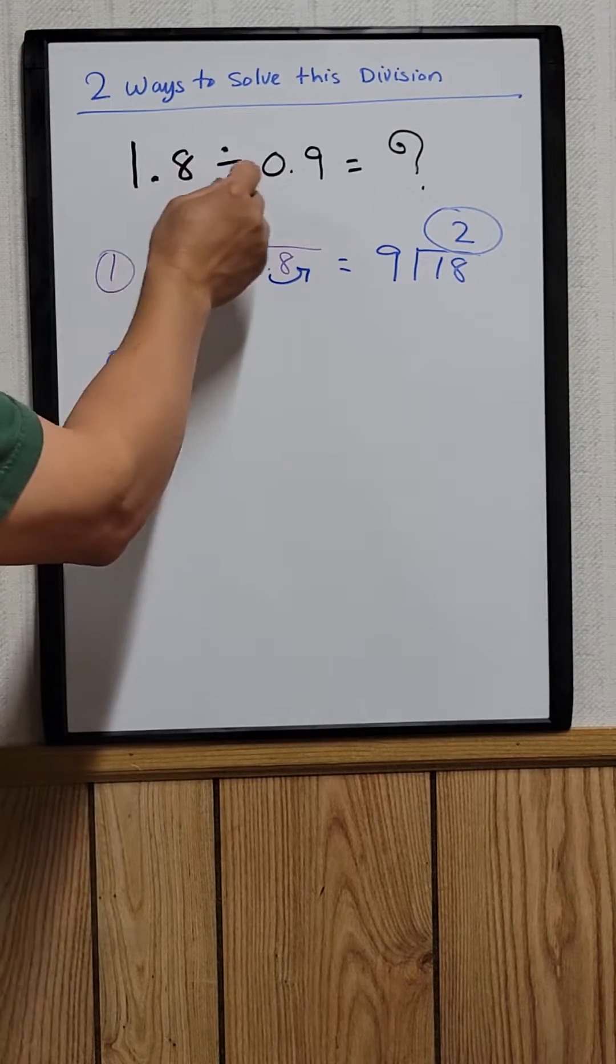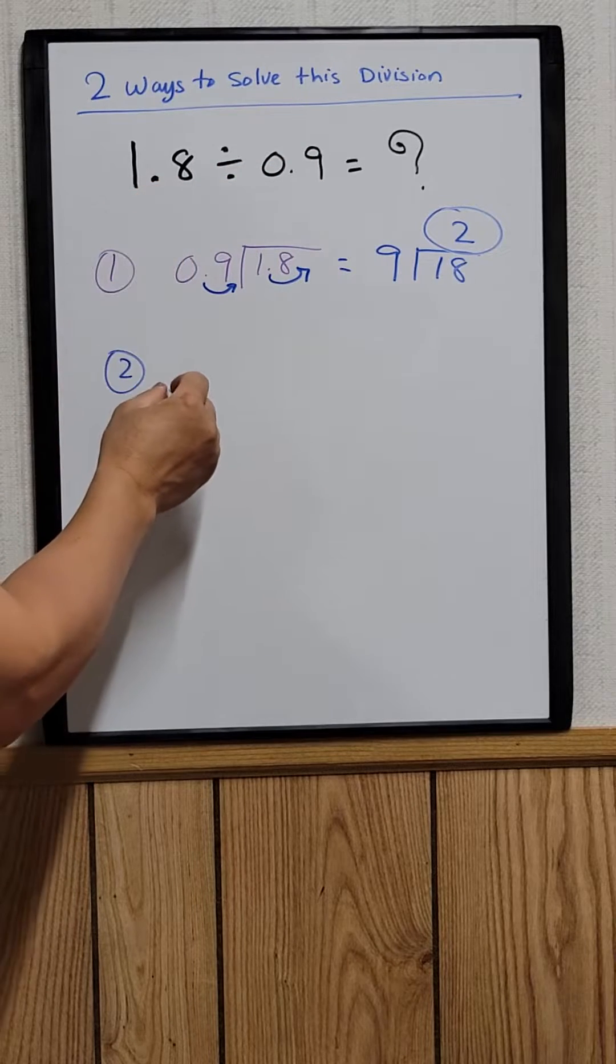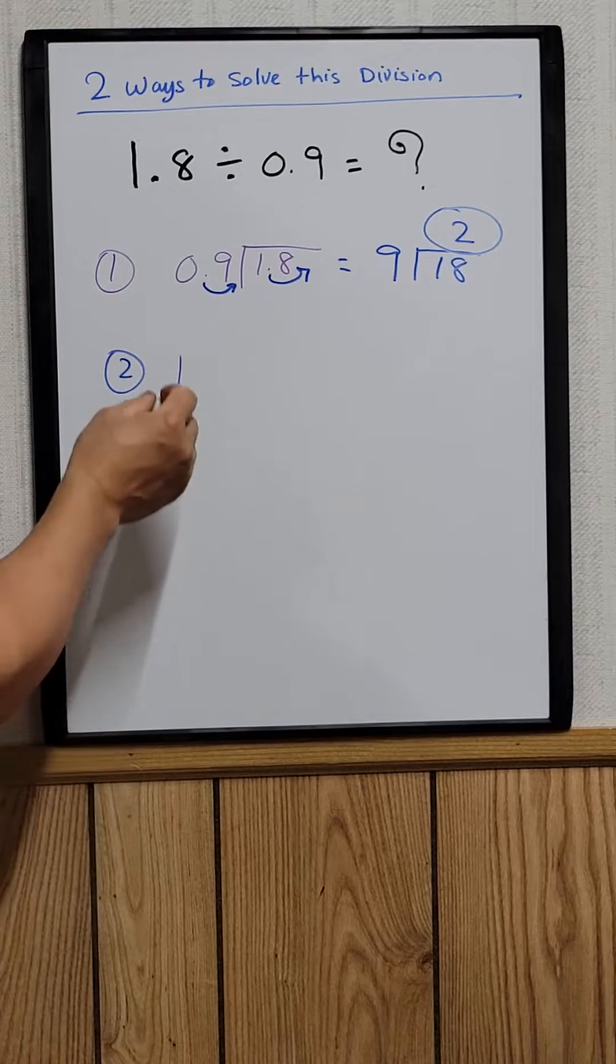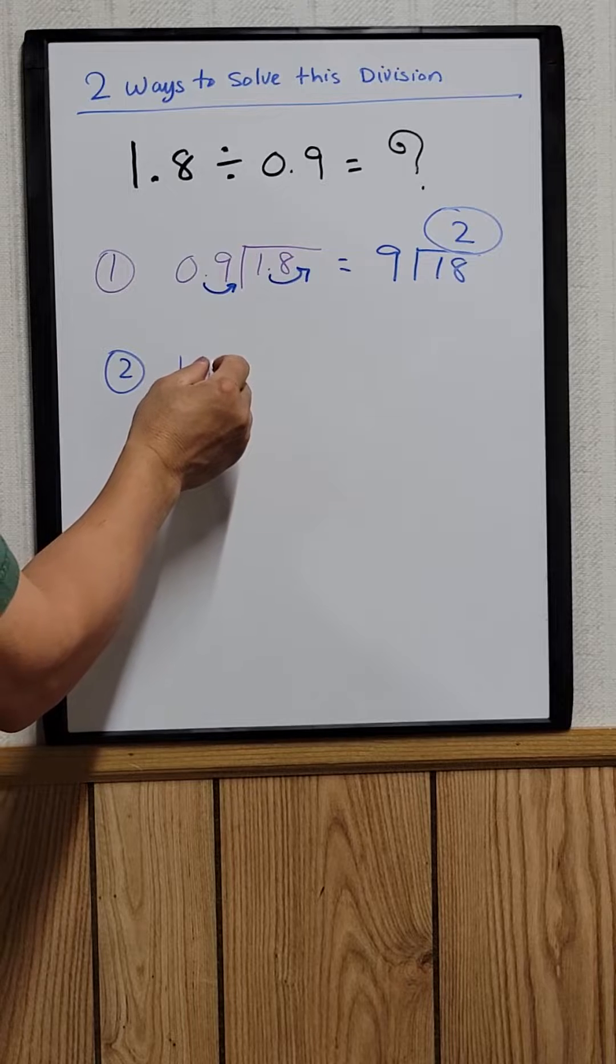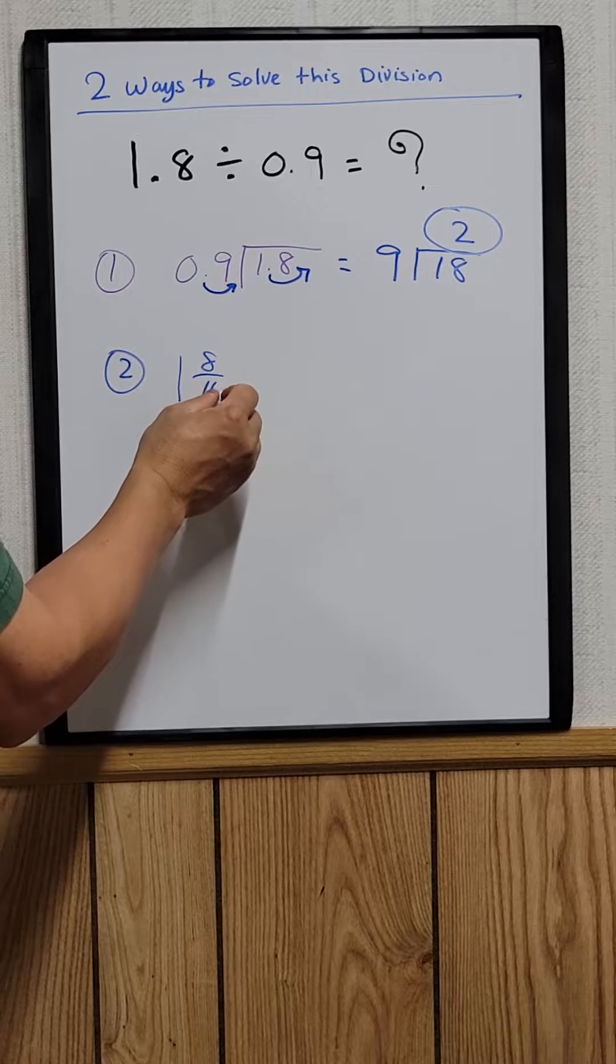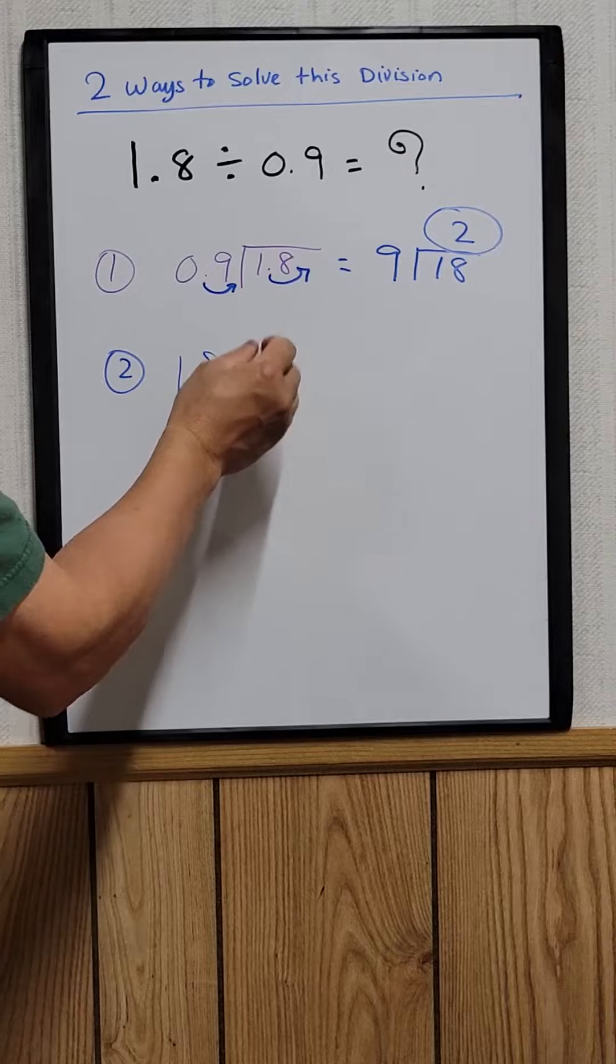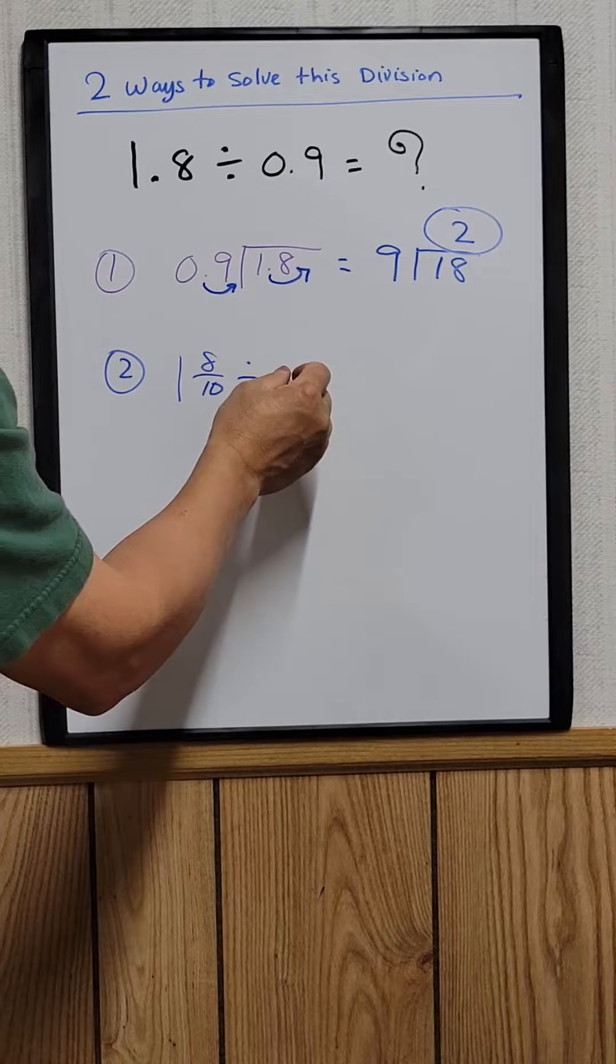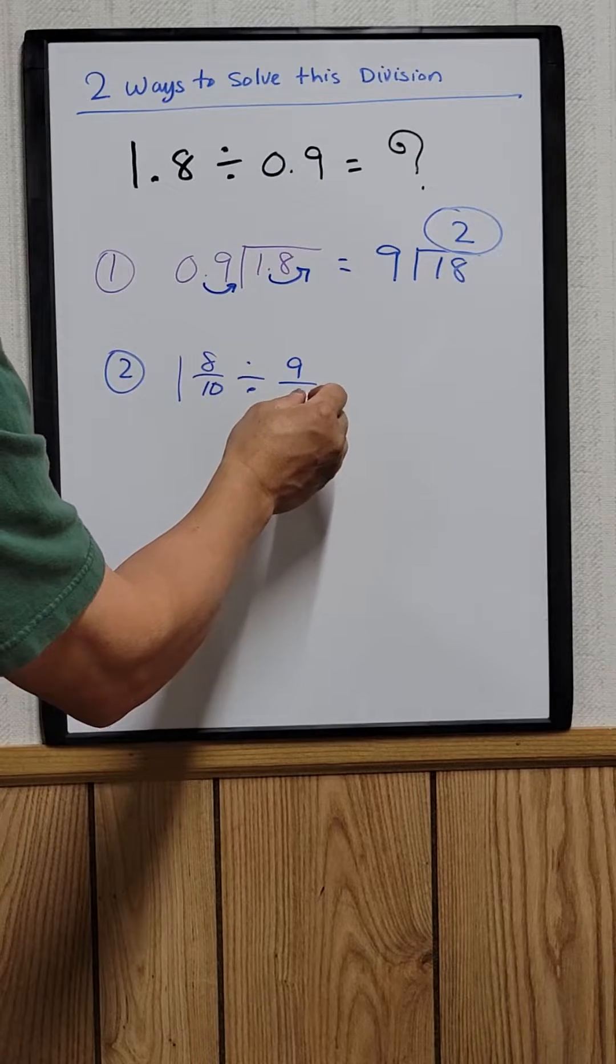So the second way, you can convert this to a fraction. So the first one would be 1.8. You can write it as 8 over 10, divided by 0.9, which would be 9 over 10.